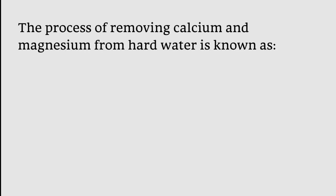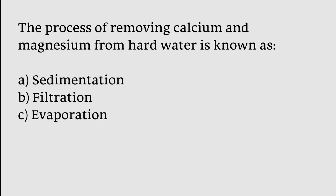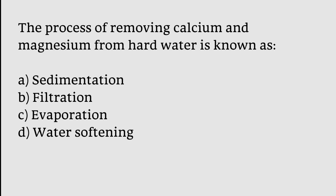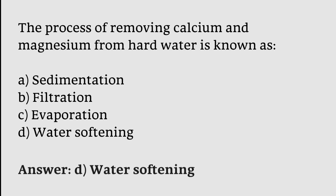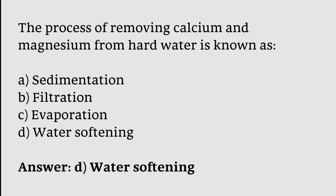The process of removing calcium and magnesium from hard water is known as: sedimentation, filtration, evaporation, water softening. The correct answer is option D. The process of removing calcium and magnesium from hard water is known as water softening.